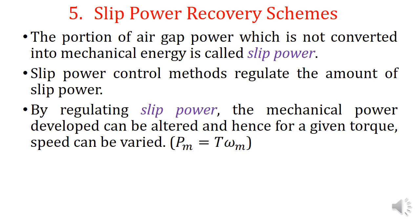The air gap power is equal to mechanical power plus slip power. So if we are controlling or varying the amount of slip power, we are varying the amount of mechanical power. Since Pm = T × ωm, for a given torque, if we are controlling Pm, then speed can be controlled.